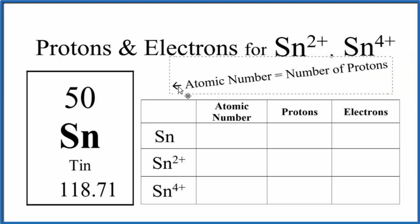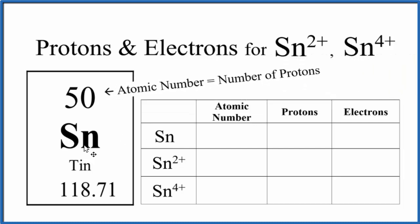When we look at the periodic table, we see the atomic number is 50 for tin, for Sn. That atomic number then, 50, is going to be the same for tin and for its ions.